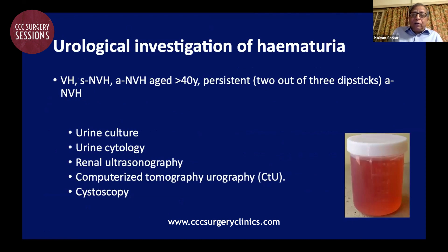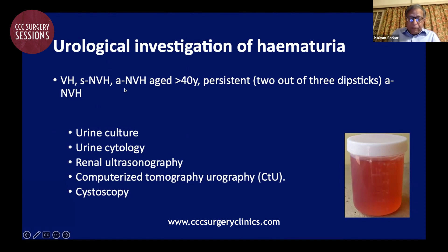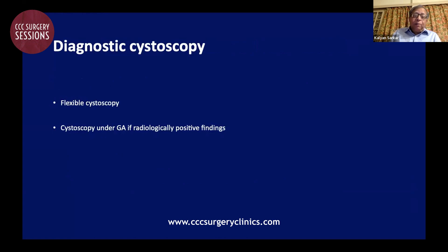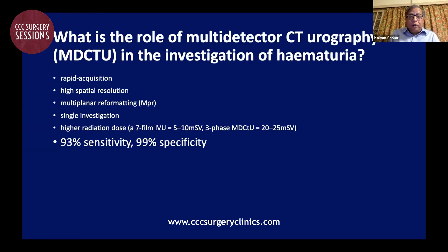The essential urological investigations for hematuria are: urine culture, urine cytology, renal ultrasonography, CT urography, and cystoscopy. These investigations are mandatory for all patients with visible hematuria, symptomatic non-visible hematuria, and asymptomatic non-visible hematuria — especially for those aged above 40. Diagnostic cystoscopy may be flexible cystoscopy or cystoscopy under general anesthesia. CT urography has revolutionized the investigation of hematuria.